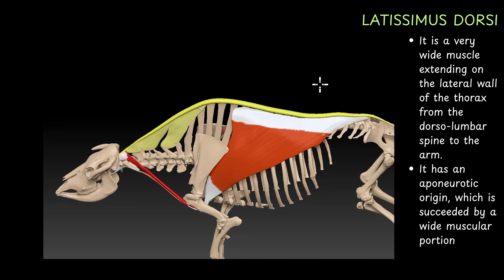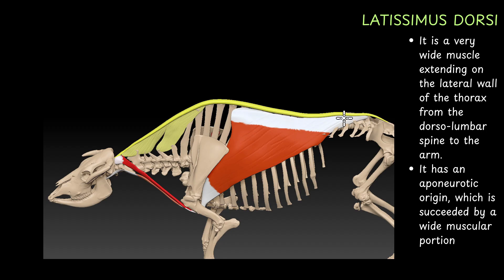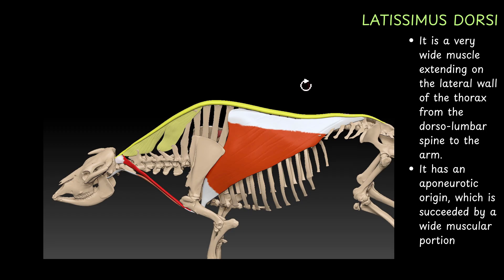The next muscle is the latissimus dorsi muscle. This is a very wide muscle extending on the lateral wall of the thorax from the dorsolumbar spine to the arm. It has an aponeurotic origin — that means the muscle originates in the form of a thin sheet, not a tendon, which is succeeded by a wide muscular portion. You can clearly see this large muscle is the latissimus dorsi, extending from the thoracolumbar spine to the arm.